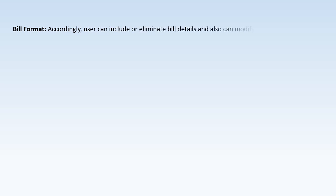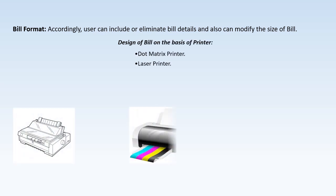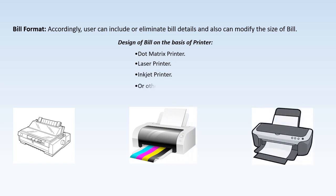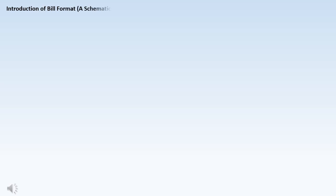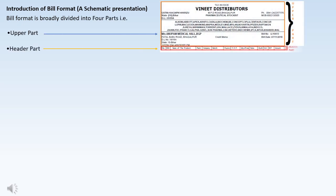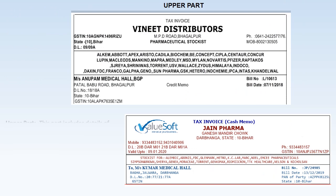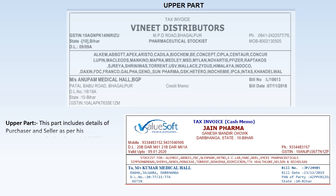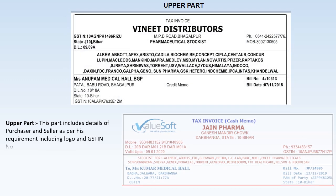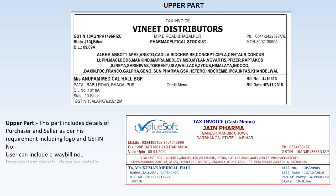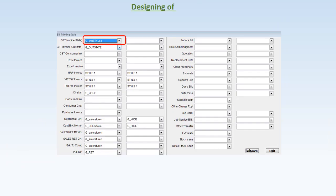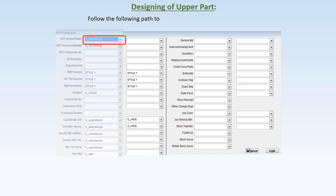Users can build bill formats accordingly — including or eliminating build details and modifying the size and design of the bill based on the printer type: dot matrix, laser, inkjet, or other Windows-based printers. The bill format is broadly divided into four parts: upper part, header part, middle part, and lower part. Let's discuss the upper part of the bill format in Value Soft.